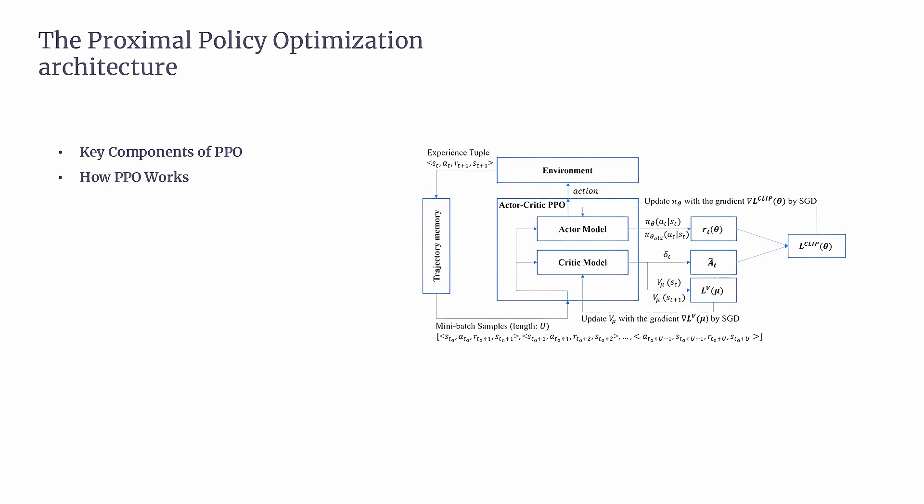The second part: how PPO works. PPO operates in two main steps. First, Data Collection: the agent collects data by interacting with the environment using its current policy. This generates a collection of experiences — like a diary of states, actions, and rewards. Second, Policy Update: using this data, PPO updates the policy. However, it does this carefully, making sure updates stay within a trust region to keep things stable. It's like fine-tuning rather than completely rewriting the policy.